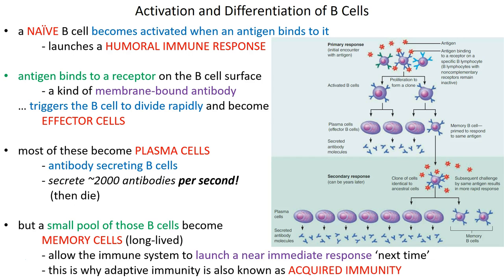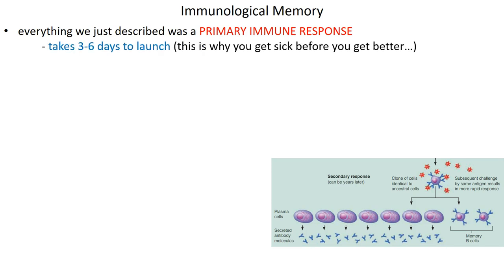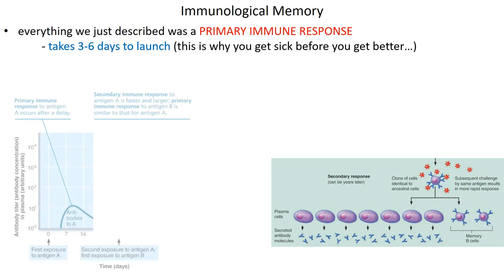These memory cells will recognize a foreign invader much more quickly and launch a near-immediate humoral response the next time that pathogen is found in the body. This is the primary immune response — the result of the initial exposure. It takes three to six days to launch, which is why we get sick. After about three to six days we begin to feel better as effector cells differentiate into plasma cells and antibodies circulate, leading to recovery after about a week.